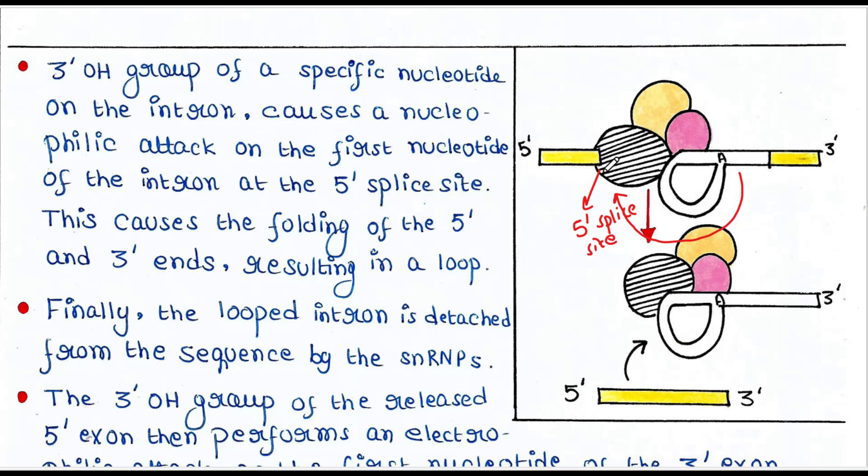What is a nucleophilic attack? A nucleophilic attack is a chemical reaction where an electron-rich component called a nucleophile attacks an electron-deficient component called an electrophile. The nucleophile donates electrons to the electrophile and forms a new bond between the two components. That's why this loop is formed.